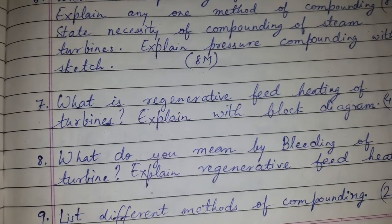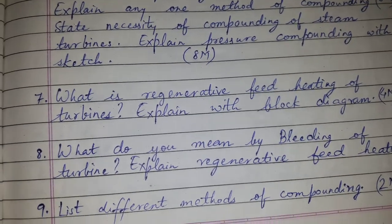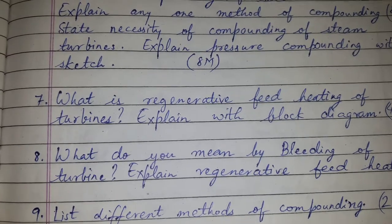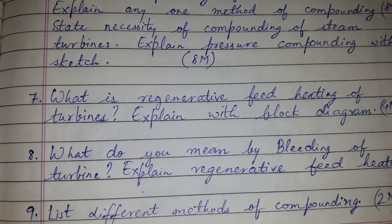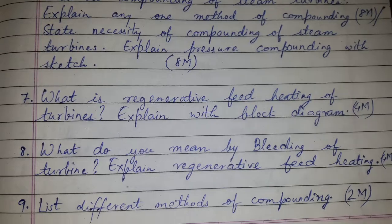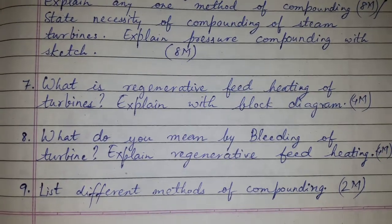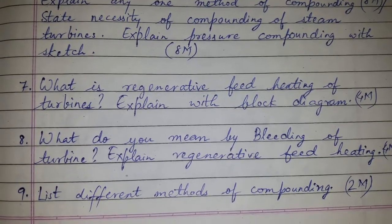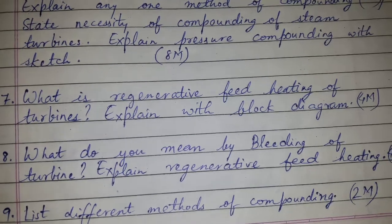Question seven: What is regenerative feed heating of turbines? Explain with block diagram, for four marks. Question eight: What do you mean by bleeding of turbine? Explain regenerative feed heating, for four marks. Question nine: List different methods of compounding, for two marks.